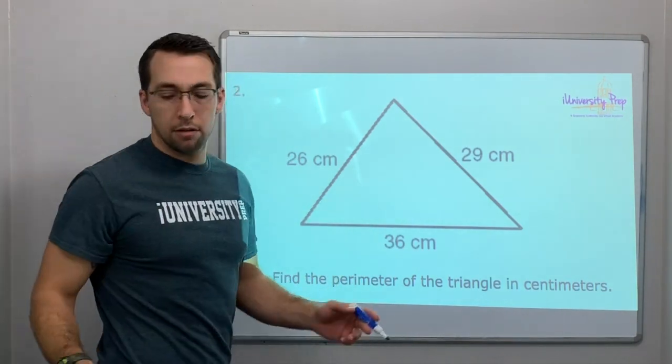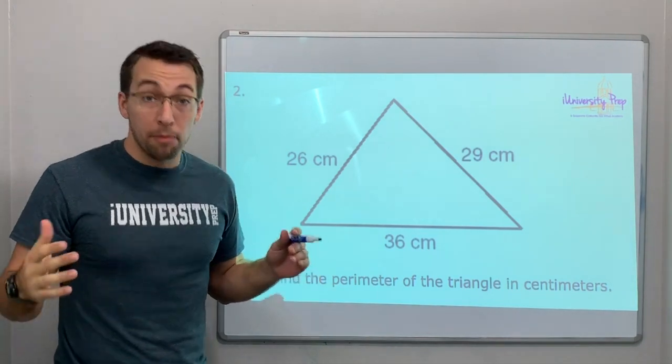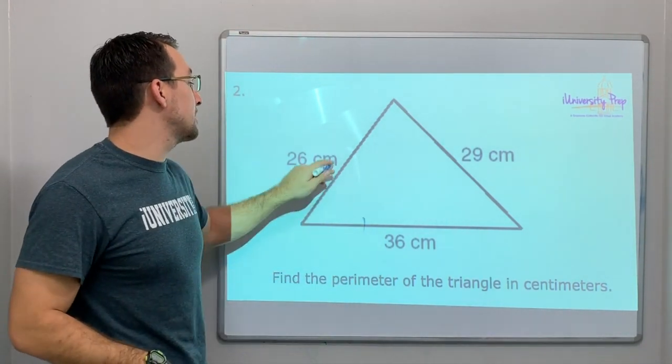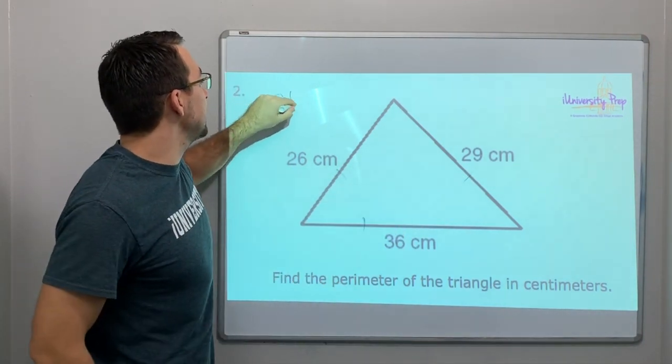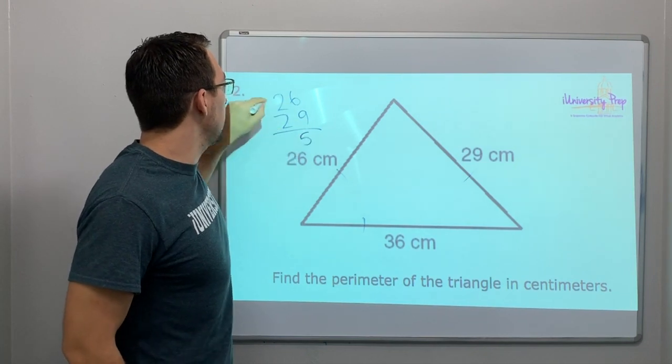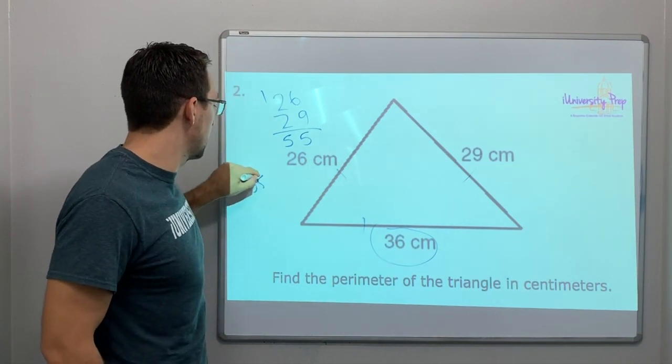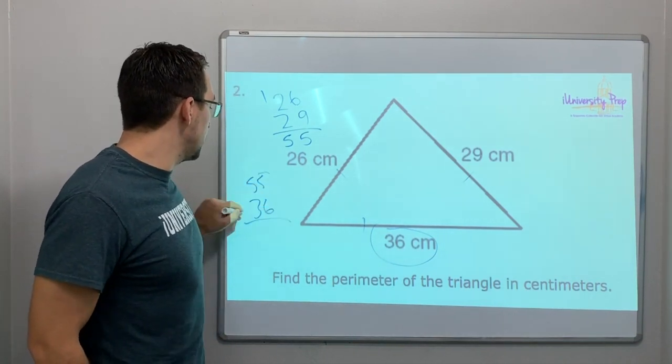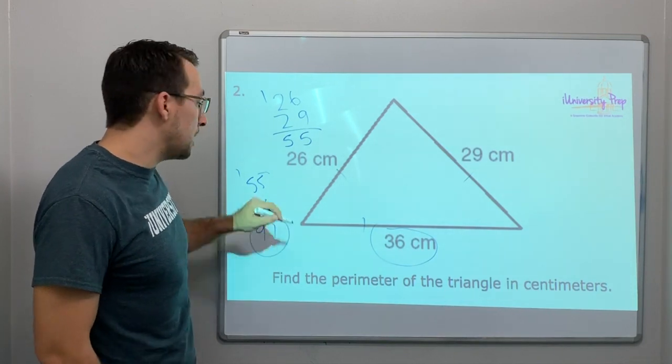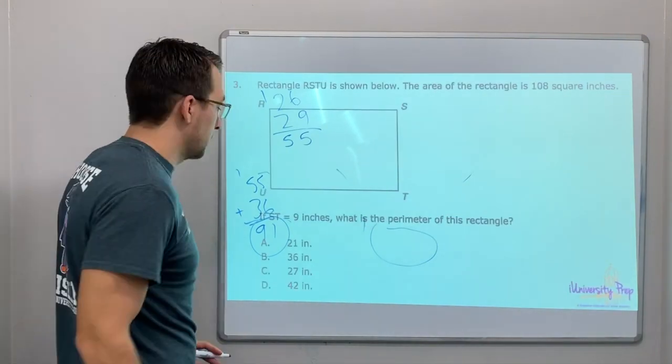Find the perimeter of the triangle in centimeters. Perimeter is all the way around, so side 1 plus side 2 plus side 3. 26 plus 29 is 55, 55 plus 36 is 91. 91 is our answer. That simple.